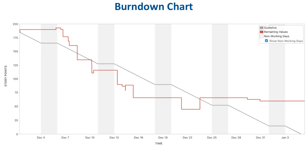One thing to notice is that the team, for whatever reason, planned to complete 180 points, which is much more than they planned and completed in the first sprint. That will be even more obvious when we look into the velocity chart a few lessons down the road. This is a good example of useful visualization when things don't go well, and it is also a mandatory topic for sprint retrospective.